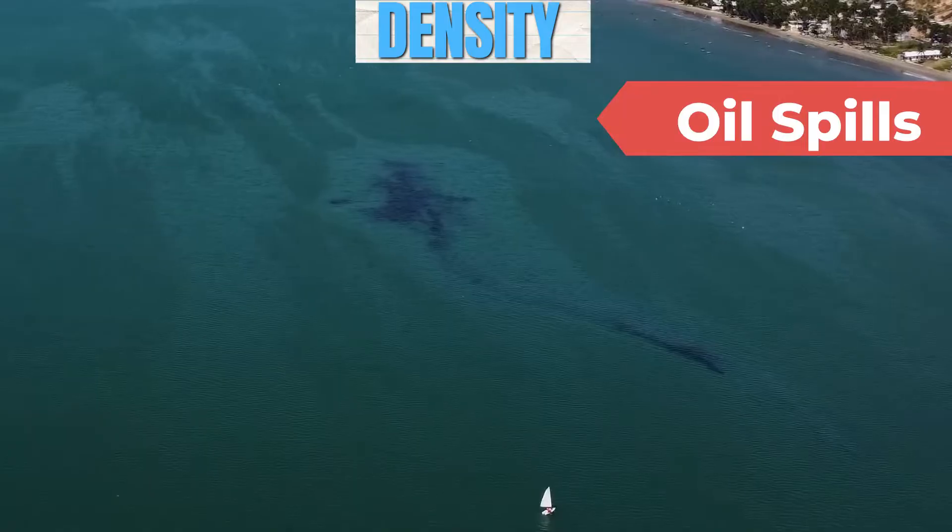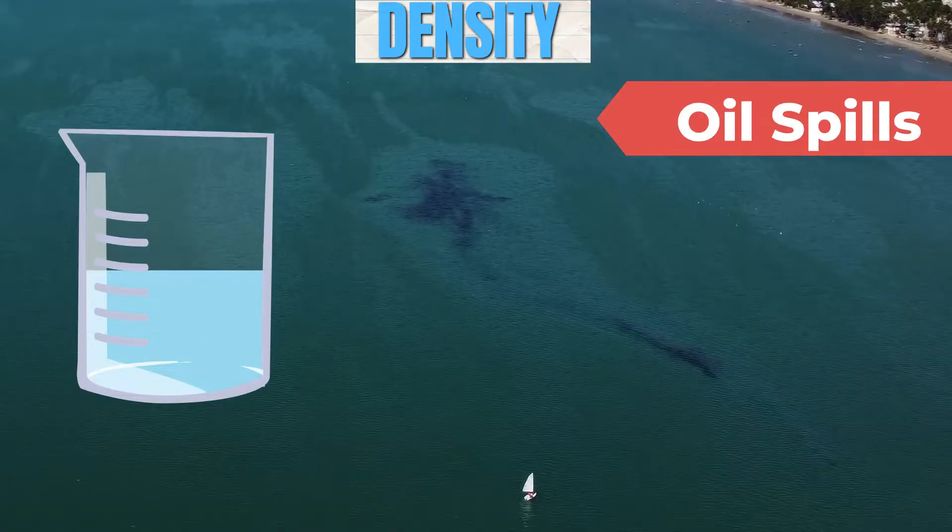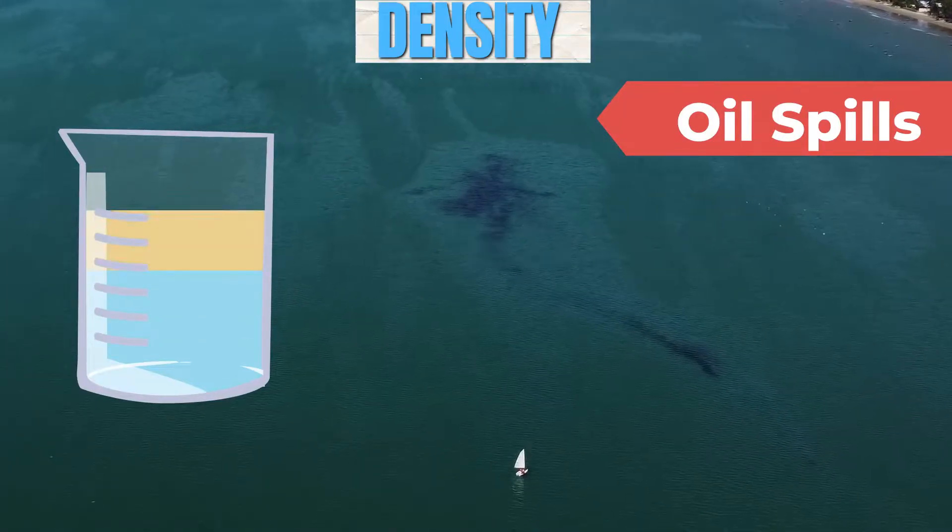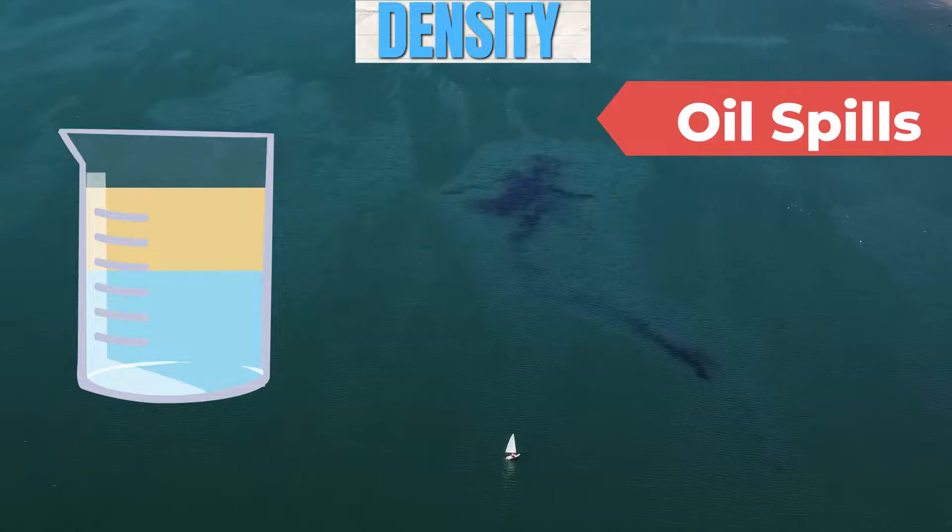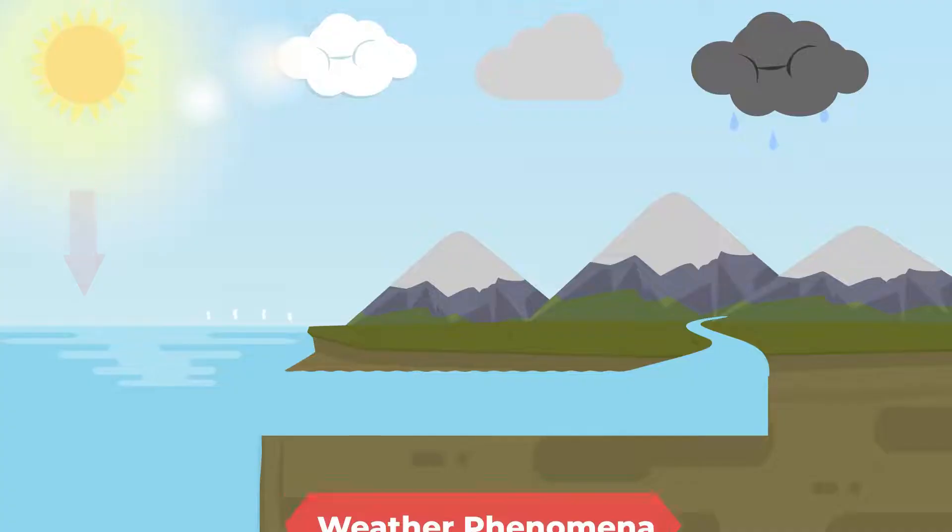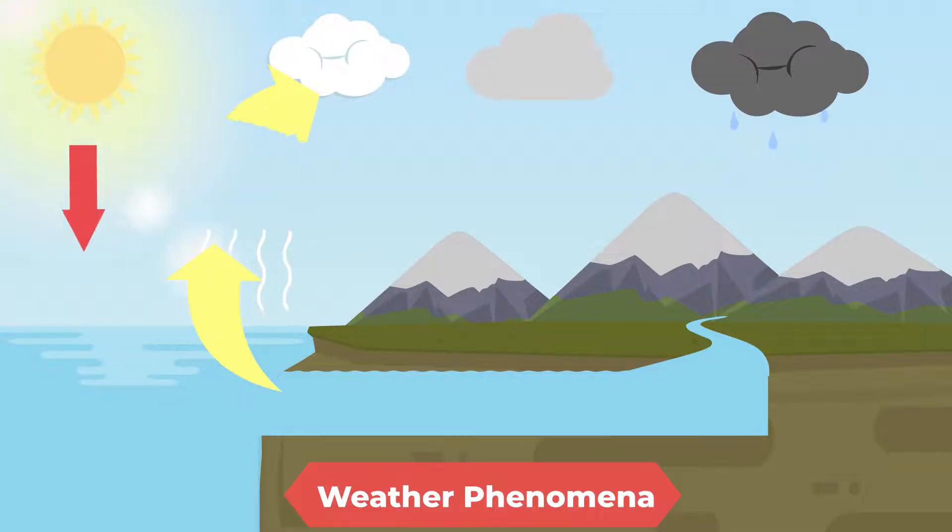We can also see density in oil spills. The density of oil is less than the density of water. That's why oil spills flow on water can be easily recovered. And we can also see density in weather phenomena. Dense cold air sinks while less dense hot air rises, resulting in air masses changing direction and temperature. When clouds become dense, precipitation occurs.